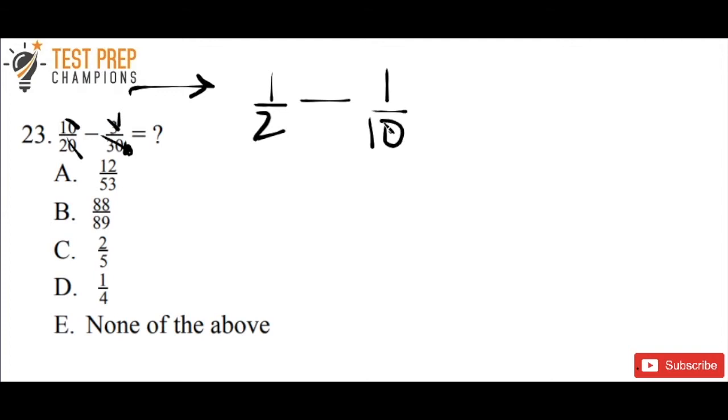Whenever you do addition or subtraction with fractions, you always want to make sure you've got a common denominator. The denominator is the bottom number of a fraction, and the top number is your numerator. So how do we get a common denominator here?